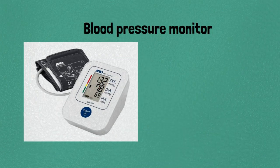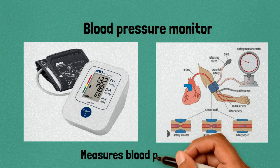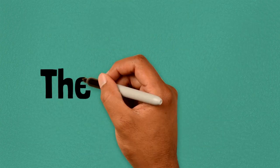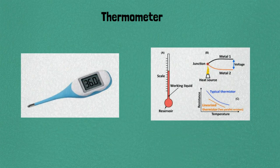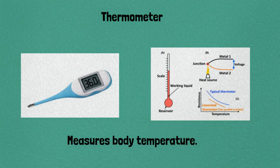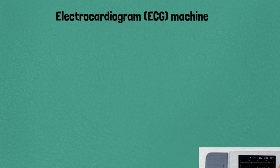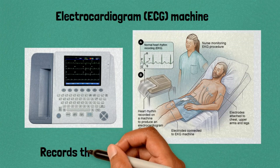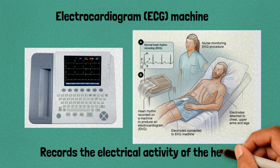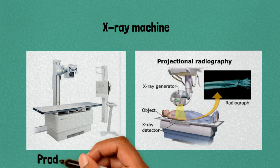measures blood pressure. Three: thermometer, measures body temperature. Four: electrocardiogram machine, records the electrical activity of the heart. Five: x-ray machine, produces images of internal body structures.